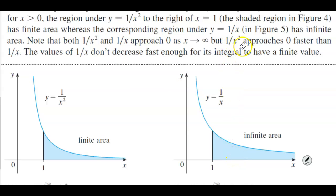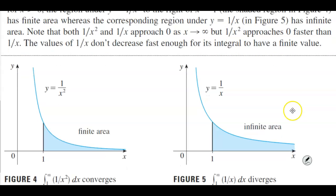But 1 over x squared approaches 0 faster than 1 over x. So the values of 1 over x don't decrease fast enough for its integral to have a finite value.